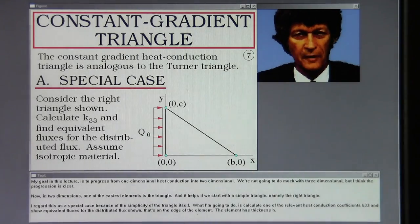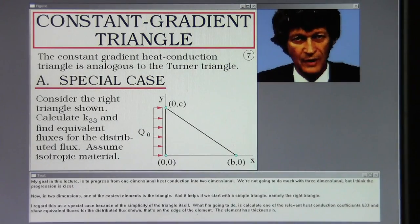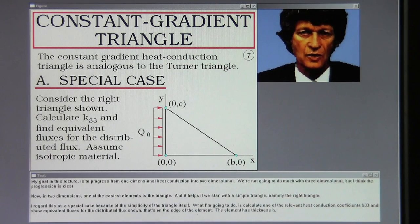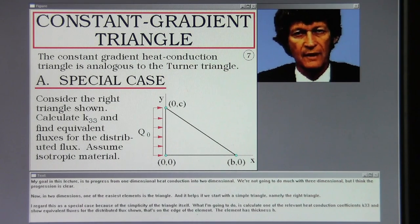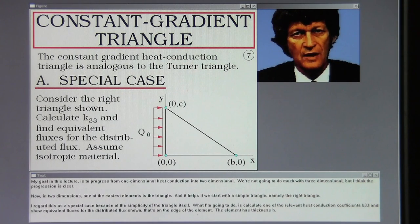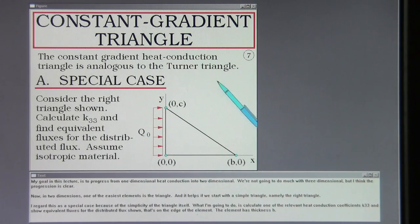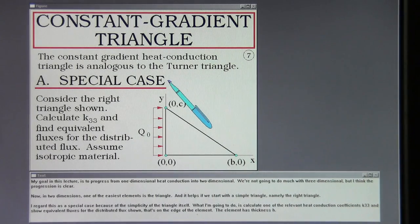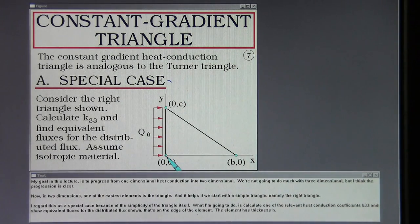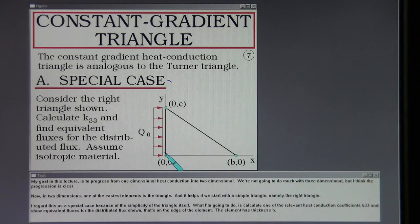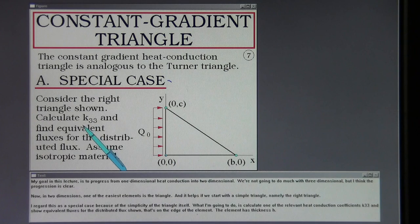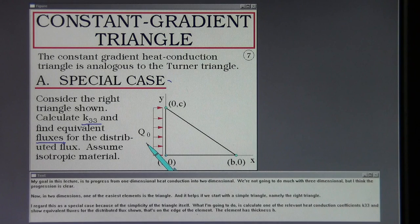My goal in this lecture is to progress from one-dimensional heat conduction into two-dimensional. We're not going to do much with three-dimensional, but the progression is clear. In two dimensions, one of the easiest elements is the triangle. It helps if we start with a simple triangle, namely the right triangle. I regard this as a special case because of the simplicity of the triangle itself. I'm going to calculate one of the relevant heat conduction coefficients, K33, and show equivalent fluxes for the distributed flux shown that's on the edge of the element. The element has thickness h.